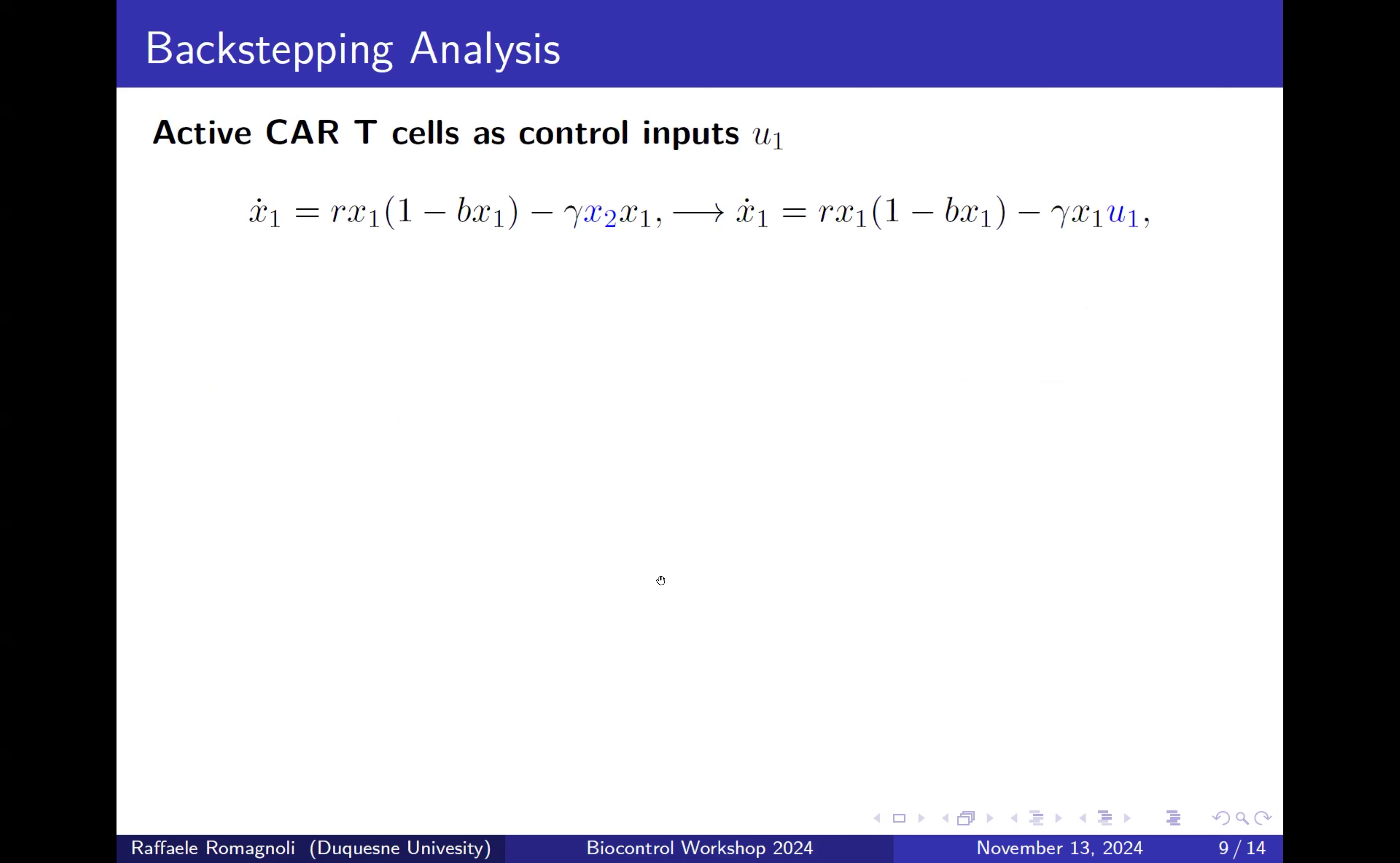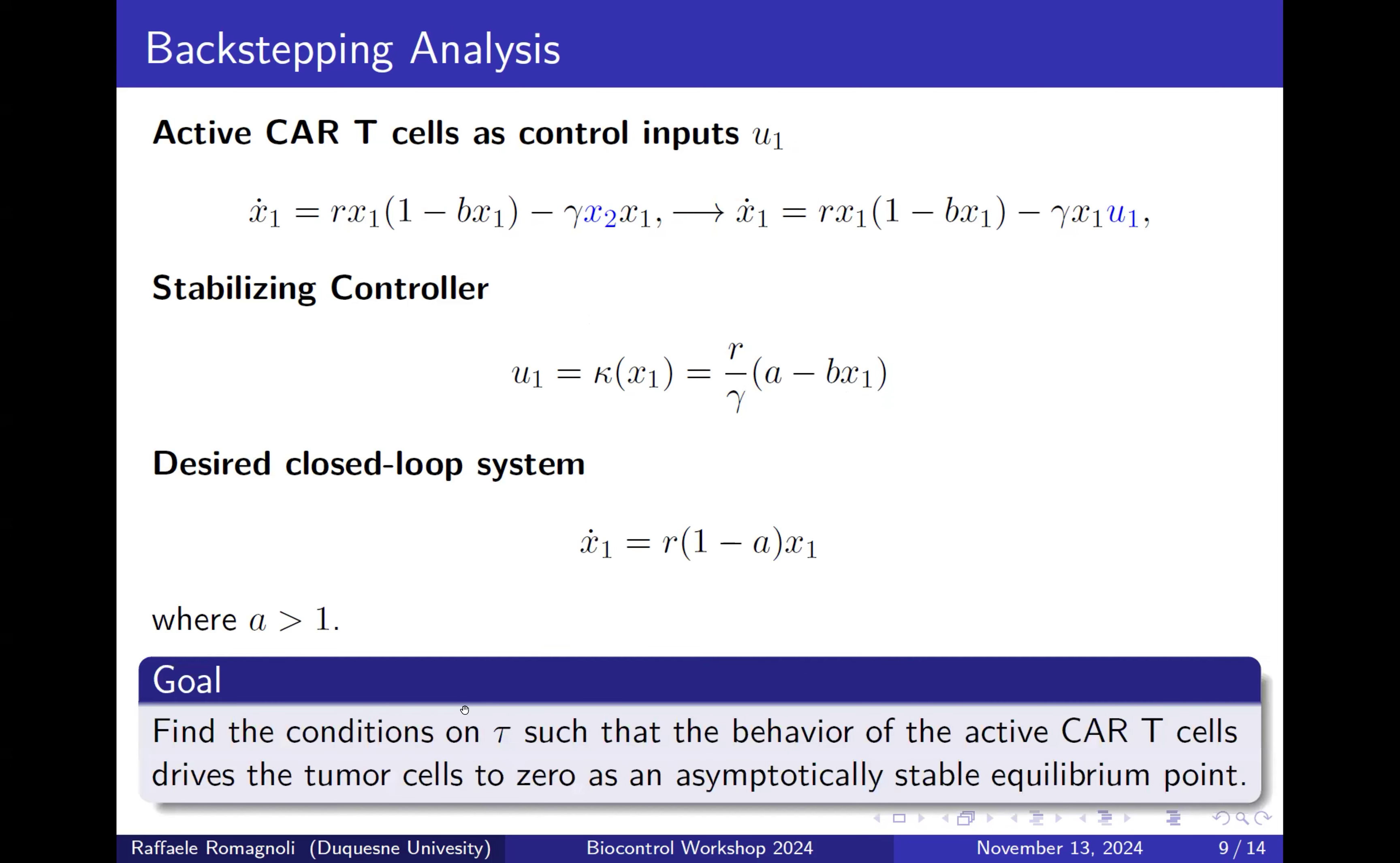To do so, we apply a backstepping analysis. If we take the first equation for the tumor cells, X2 represents our control input, and we can use it as U1. The idea is to check if U1 can be represented as a stabilizing controller. This is not the control that we are going to implement, but we want to study if there exists a tau such that at a certain point the active CAR-T cell is behaving like this state feedback controller that stabilizes the tumor equation, where A is some parameter that we decide. This is our goal. To do so, we apply backstepping.